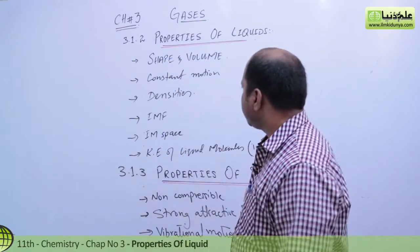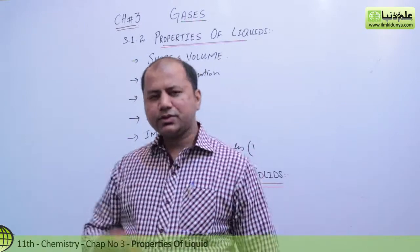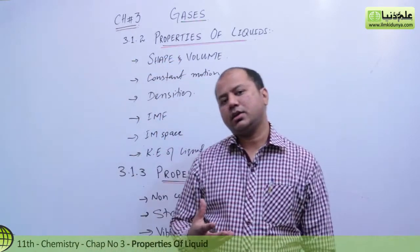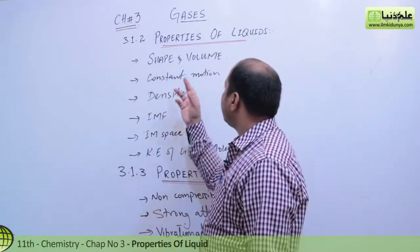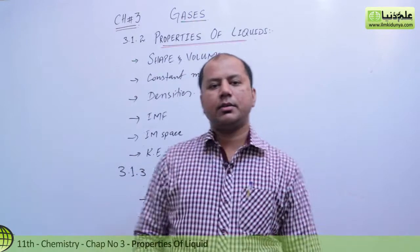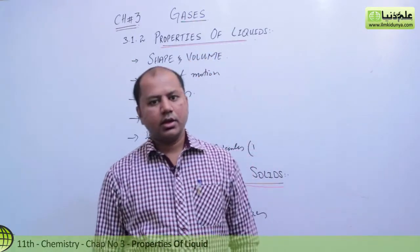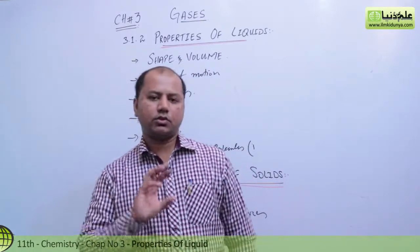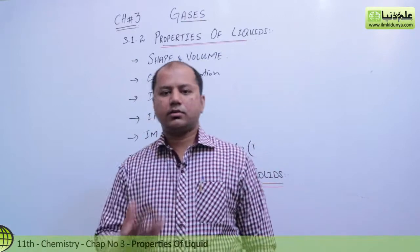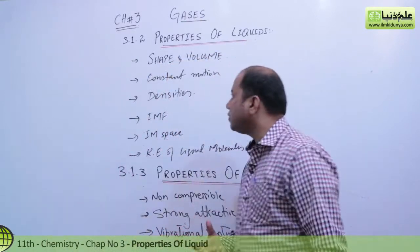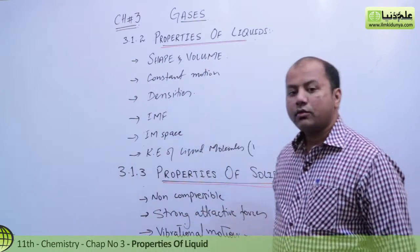Shape and volume can be seen in liquids. Liquids, when you put them in a container, will take the shape of that container. But the volume becomes constant. So if you take a container of 100 cubic meters, it doesn't mean the liquid will occupy 100 cubic meters. If the liquid is little, it will occupy little volume. So the shape will match the container, but the volume will be constant.